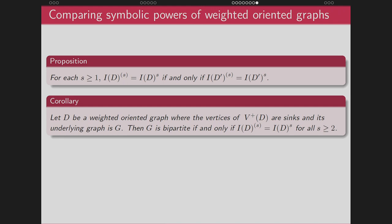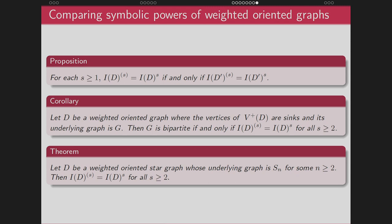Using this result, we proved the generalization of Simis's result for weighted oriented graphs: if D is a weighted oriented graph where the vertices of V+(D) are sinks, then G is bipartite if and only if the ordinary and symbolic powers are equal for all S ≥ 2. Here we need the assumption that the vertices of V+(D) are sinks. A similar result to Simis's holds here as well. We also showed that for a star graph, the symbolic and ordinary powers are equal.